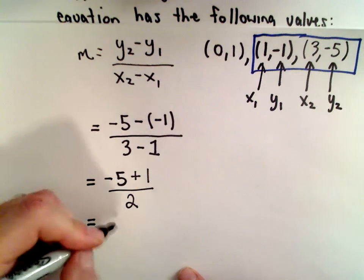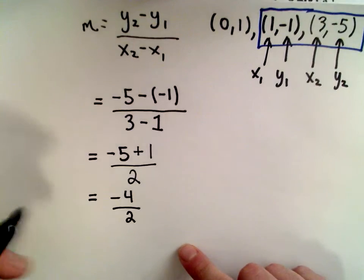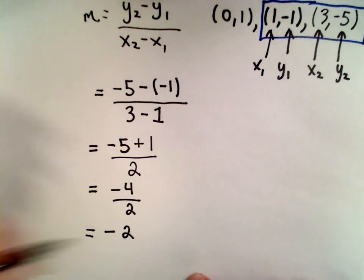Negative 5 plus 1, that's negative 4. And a negative divided by a positive, that's going to be a negative number. 4 divided by 2 is equal to 2.